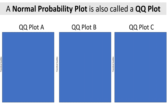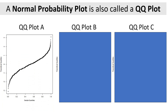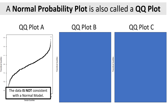Last time we talked about the normal probability plot, also called a QQ plot. We use a QQ plot to assess whether our data is consistent with a normal population model. Here I'm going to show you three QQ plots. In the first case, the data is not consistent with a normal model. If the individual data points fall in a straight line, we say the data is consistent. If the data points do not fall in a straight line — they're curved — then we say not consistent.